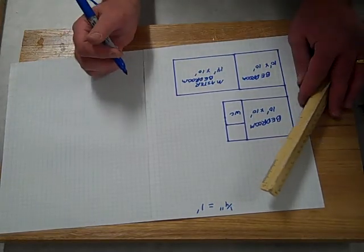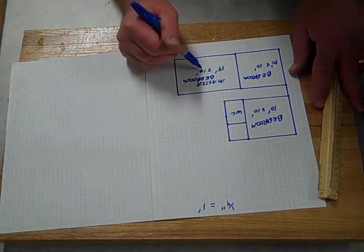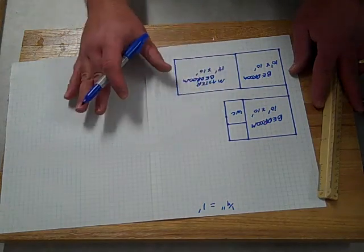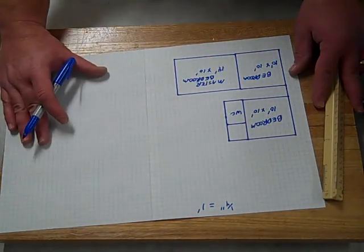So at this point all we're doing is we're drawing the walls we're labeling the rooms and putting the measurements with the length times the width. When you get all finished with this you should have one floor of your house all drawn out on here.